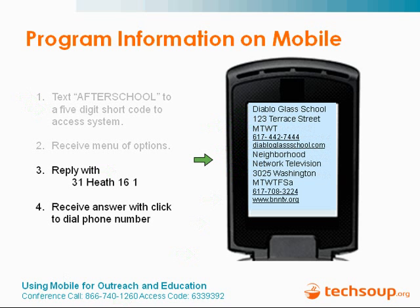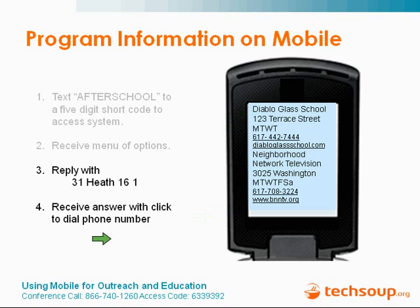Here's an example of what users might receive if they reply with, for example, 31 Heath, age 16, and interest code one. If I conducted the same search on Boston Navigator, this is what would have appeared — opportunities at Diablo Glass Studio and the Neighborhood Network Television Program. That's the first system: to deliver program information to youth and youth workers. Our audience for this service includes both high school-age youth themselves and the youth workers that support them. Boston has youth workers who work on the streets with disconnected and hard-to-serve youth, and we want them to have this information so they can respond in real time, wherever they happen to be.